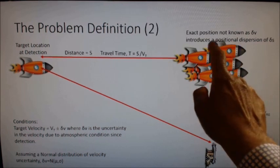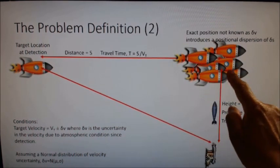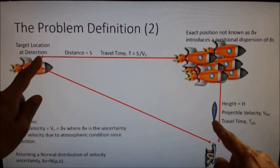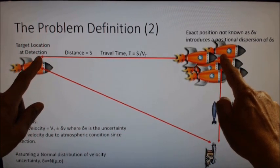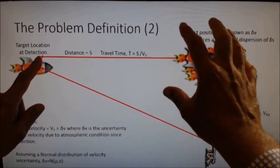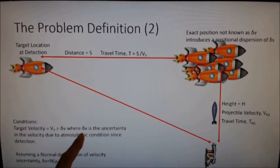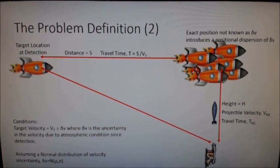The second part of the problem definition is the uncertainty about the true location of the target at the anticipated location. And this is because in the time it was detected to the time it arrives at this anticipated location, the atmospheric conditions will introduce a delta V. Therefore, the target velocity is now Vt plus or minus delta V. And delta V is due to the uncertainty in the velocity. And since it's an error term, we can model it with a normal distribution of mean mu and standard deviation sigma. Of course, we can model it with other types of distributions. But the fact that we're using any one particular distribution is not as critical to this particular example to illustrate the point of accuracy.